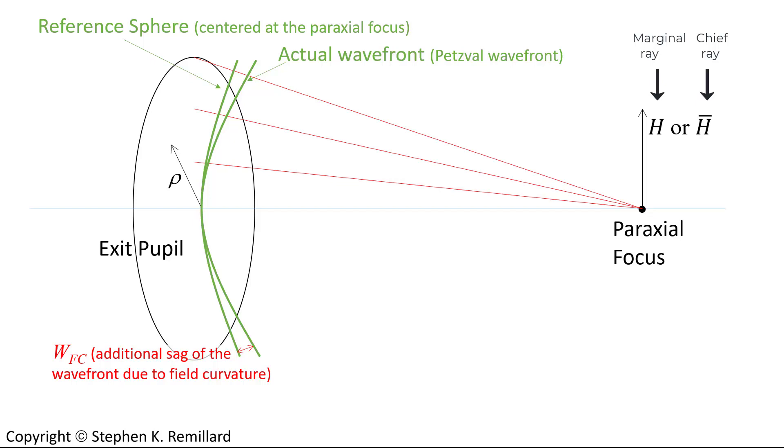There are two spheres to think about at the exit pupil. There is the reference sphere, which is an actual sphere that is centered at the actual paraxial focus. And then there is the actual wavefront, which if the only aberration in the system is Petzval curvature, you can call it the Petzval wavefront. But it will deviate from the reference sphere. And the deviation, called W sub fc, fc for field curvature, is in fact the additional sag that you pick up as a result of the Petzval curvature. And it increases as you go out towards the edge of the pupil.